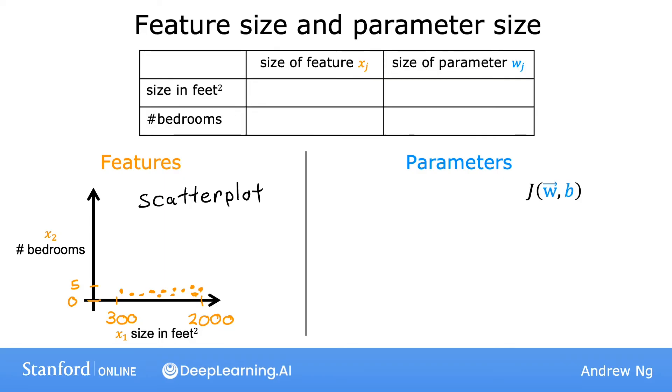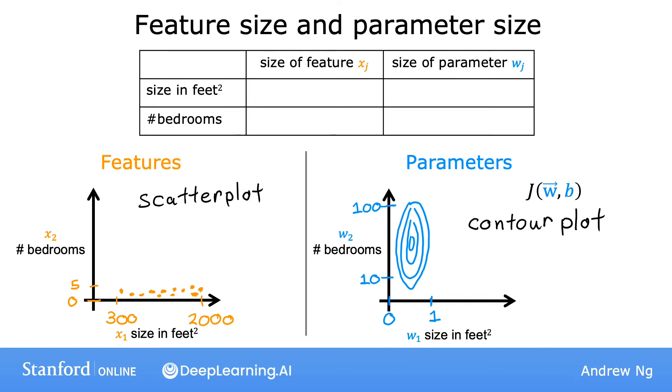Next, let's look at how the cost function might look in a contour plot. You might see a contour plot where the horizontal axis has a much narrower range, say between 0 and 1, whereas the vertical axis takes on much larger values, say between 10 and 100. So the contours form ovals or ellipses, and they are short on one side and longer on the other. This is because a very small change to w1 can have a very large impact on the estimated price and thus a very large impact on the cost j, because w1 tends to be multiplied by a very large number, the size in square feet. In contrast, it takes a much larger change in w2 in order to change the predictions much, and thus small changes to w2 don't change the cost function nearly as much.